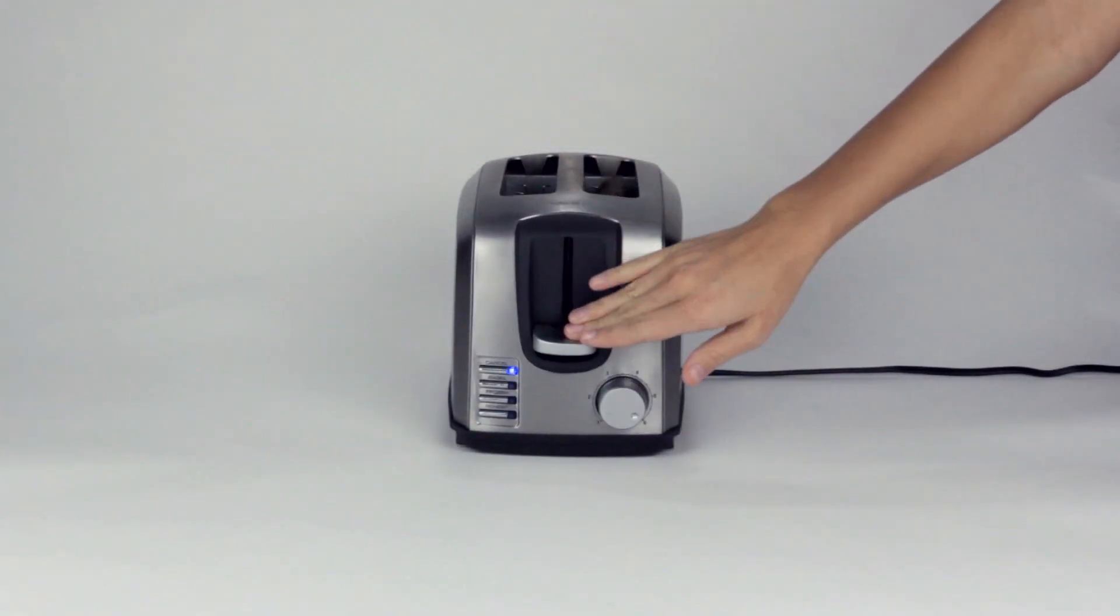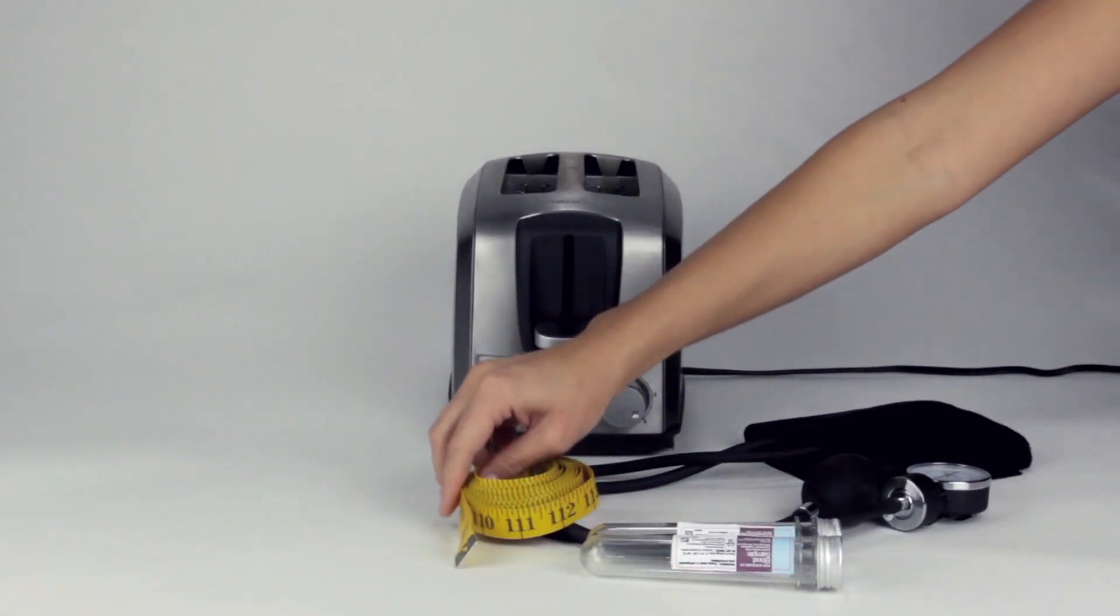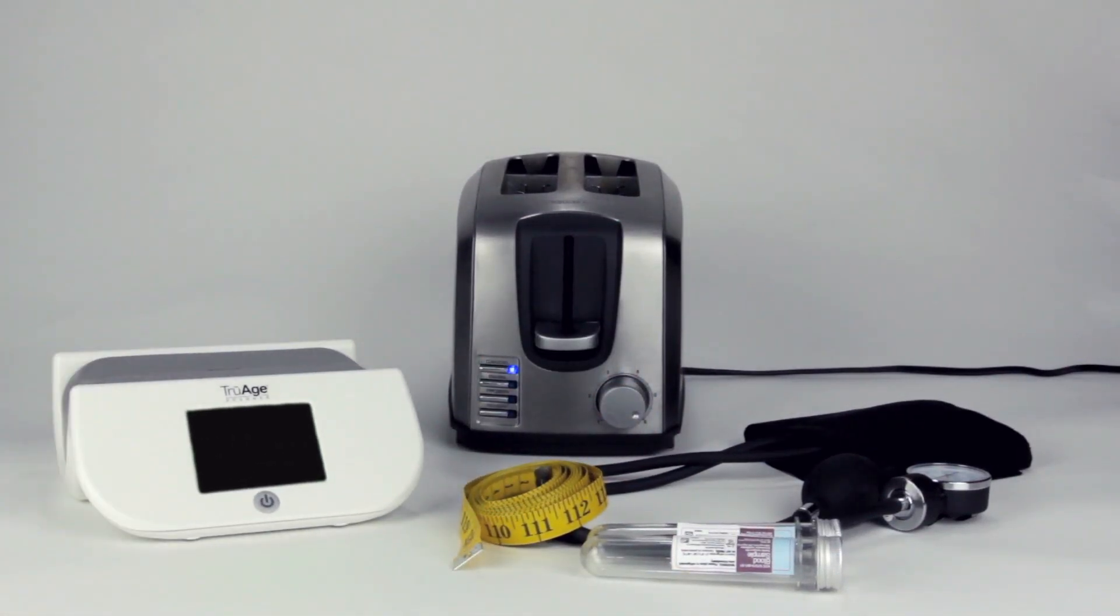Most of us know the importance of monitoring our cholesterol, blood pressure, and body mass index, or BMI. But there's another health marker we need to know as well: Advanced Glycation End Products, or AGEs.